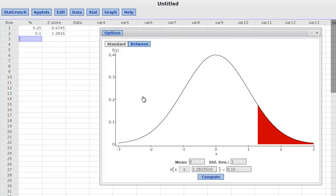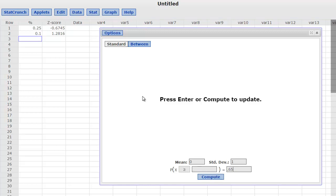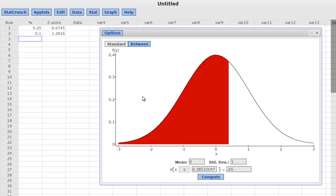We could do a couple more. We could do 65%, but I want to do the lowest 65%. And there it is. So it's 0.3853.